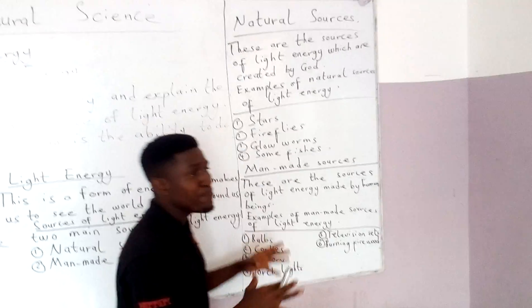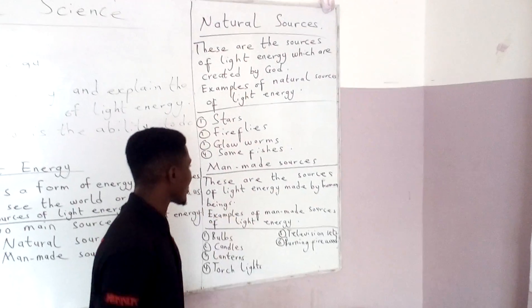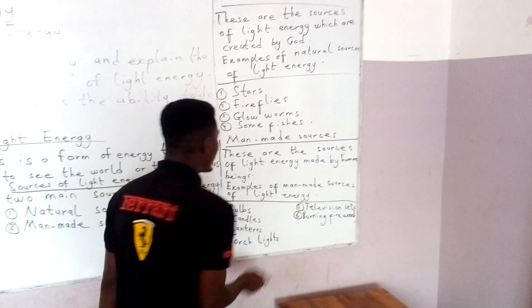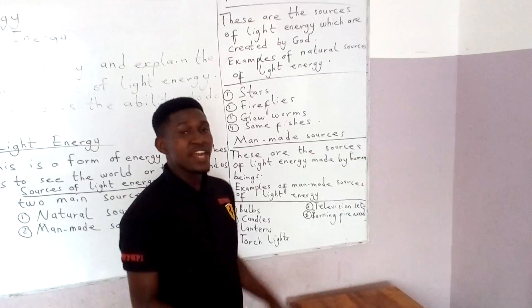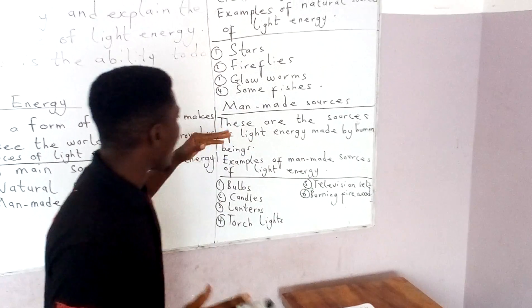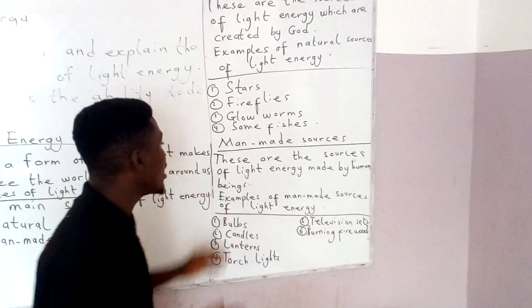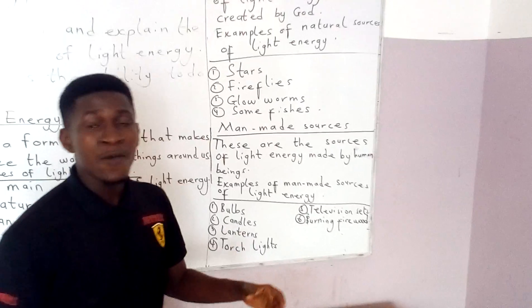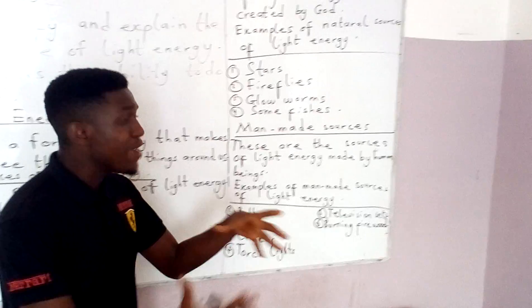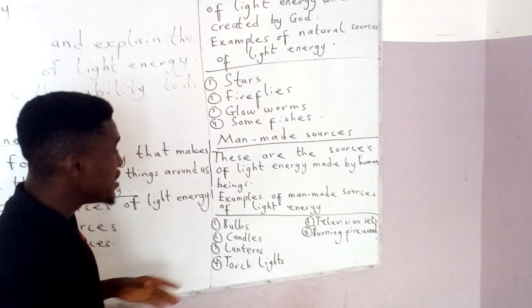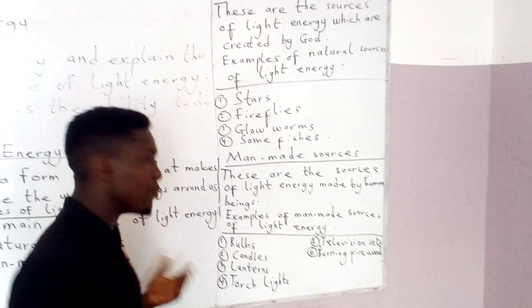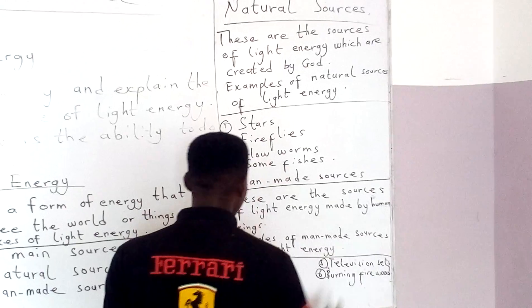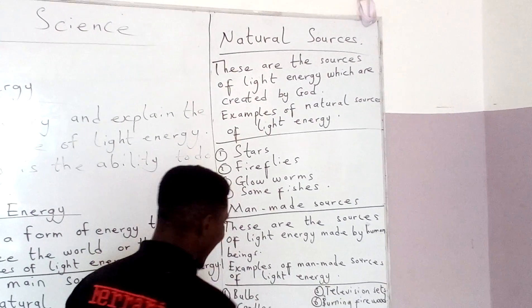Now let's come to the man-made sources, also called artificial sources. These are sources of light energy which were made by human beings, and we have been using them in our various homes. Let's go through some examples of man-made sources of light energy.